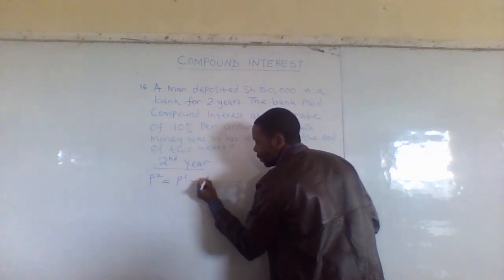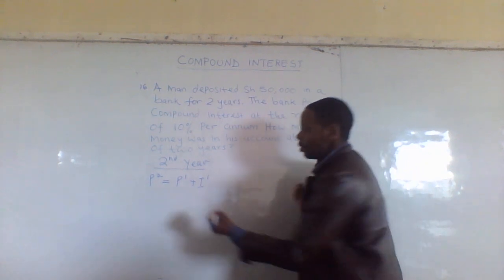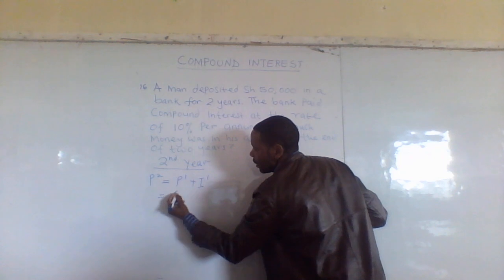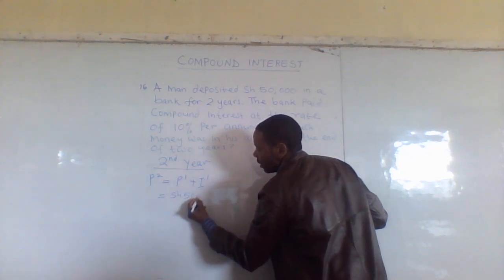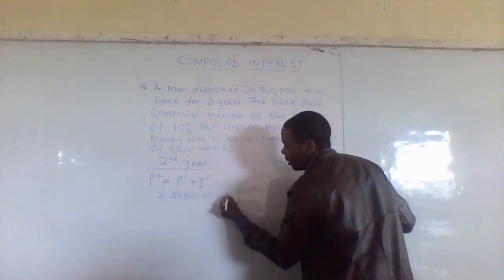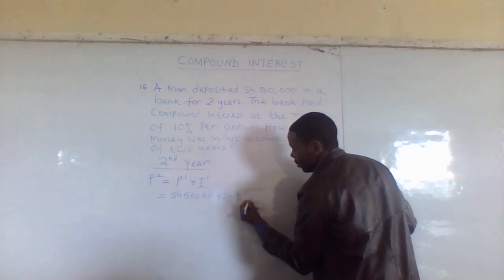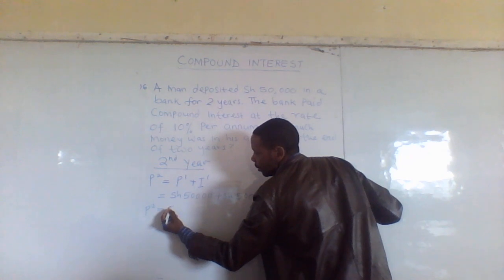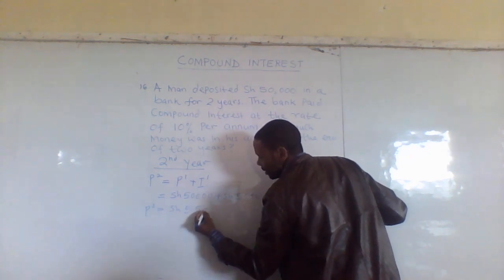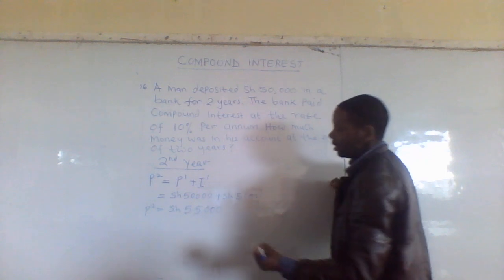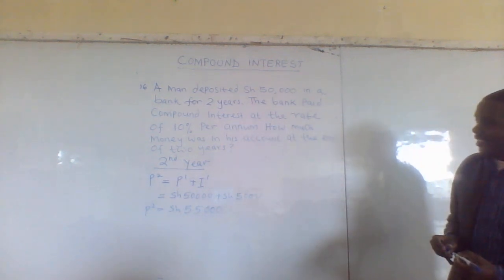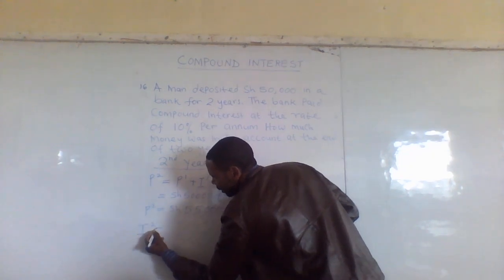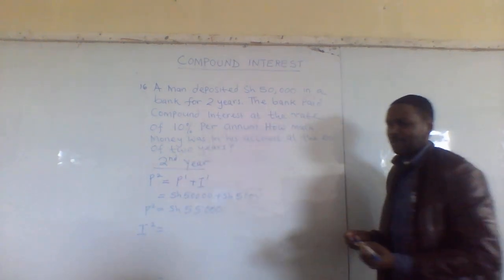Principal 2 = P1 + Interest 1. What was the principal, the money you started with? 50,000. Plus the interest we got: 5,000. So the second year is starting with a principal of 55,000. I hope you are following. Yes! Now we come to the interest for the second year.